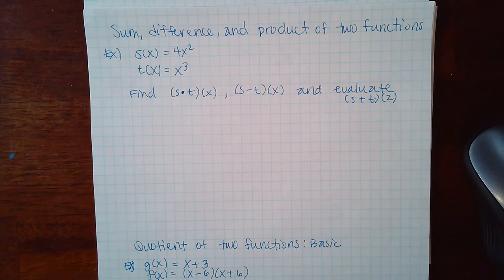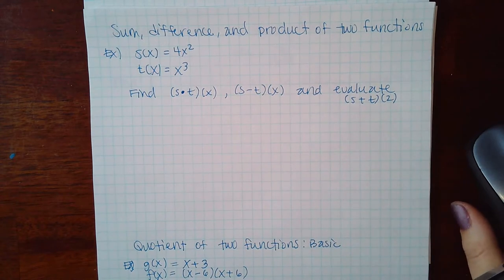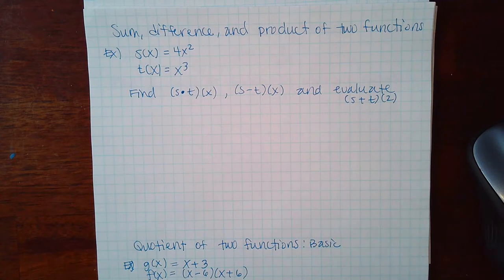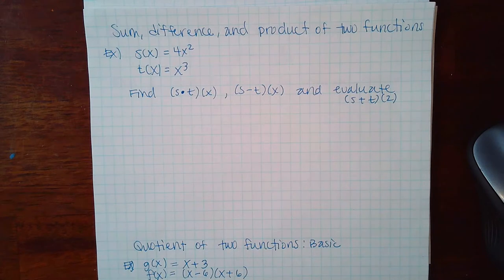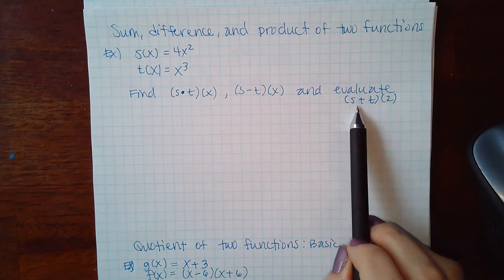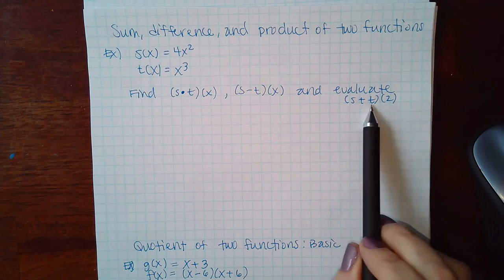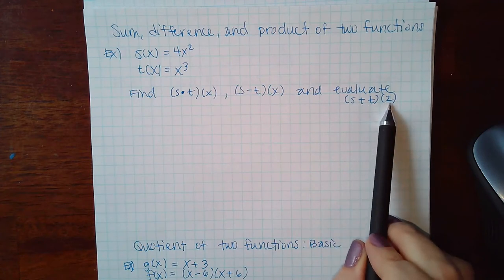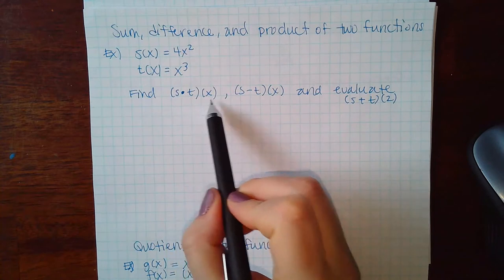This is module 27 part 2. The example involves the sum, difference, and product of two functions: s(x) = 4x² and t(x) = x³. They want us to find the product, difference, and sum, and evaluate for a particular x value. Let's first figure out the general form.